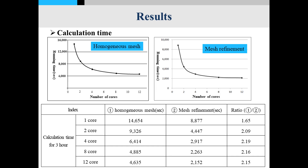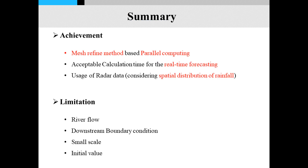This is the final result. Using the homogeneous mesh with one core, the calculation time is more than 14,000 seconds for three-hour calculations. But if you use the mesh refinement method we can reduce this by 1.5 times, and if you use 12 cores we can drastically reduce the calculation time to less than four times faster compared with using one core. The mesh refinement method based parallel computing technique achieves acceptable accuracy and calculation time for a real-time forecasting system.